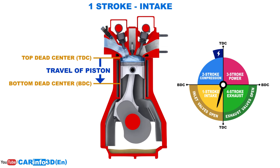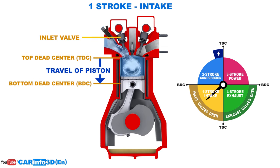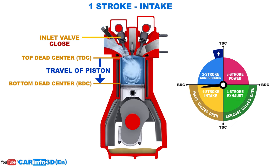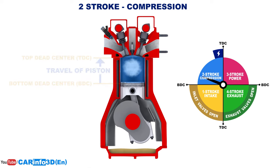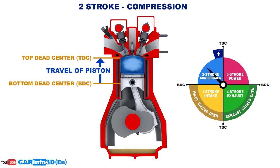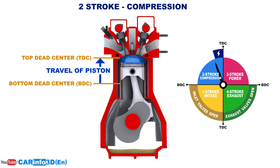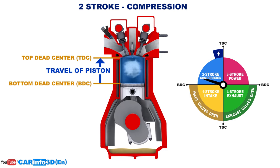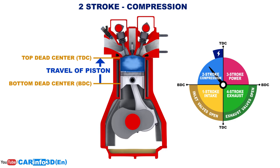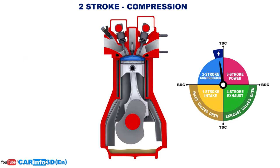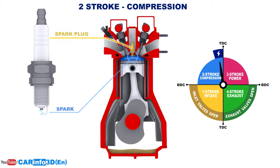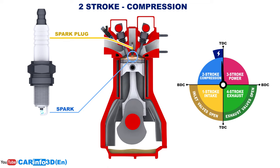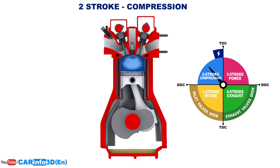The intake stroke is completed when the piston reaches bottom dead center and the inlet valves close. The second stroke is compression. This stroke starts at bottom dead center and ends at top dead center; all valves are closed. The cylinder volume is reduced, causing the fuel-air mixture to compress, which raises the cylinder's temperature and pressure. As the piston approaches top dead center, the spark plug ignites the fuel-air mixture. The stroke is finished when the piston reaches top dead center.